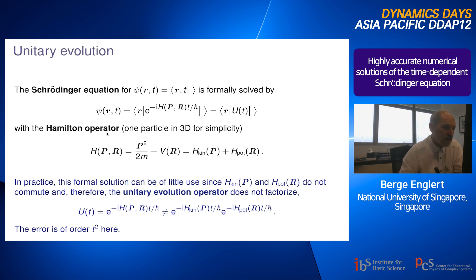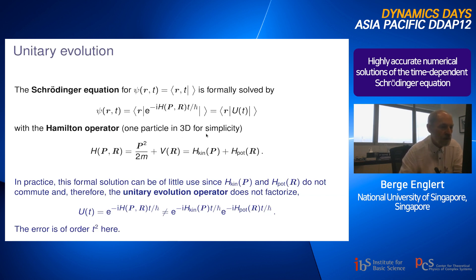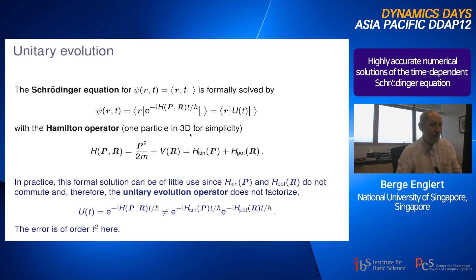For the purpose of this talk I'll simplify to a single particle moving in 3D, which has a kinetic energy depending on momentum and a potential energy depending on position. Of course, these two pieces of the Hamiltonian operator do not commute.